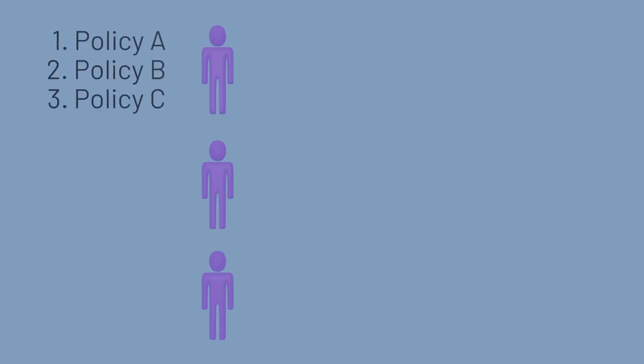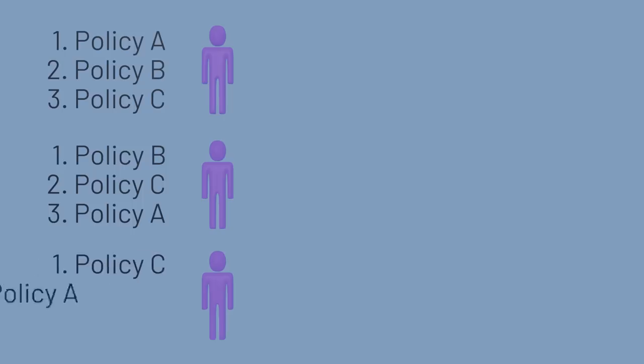Imagine that in a democratic society, citizens are voting on what policy to make into law. One voter likes policy A, has policy B as a second choice, and dislikes policy C. Another voter prefers policy B, then policy C, then policy A, and a third voter prefers policy C, then policy A, then policy B.